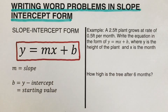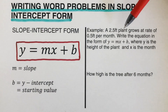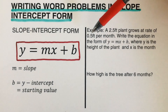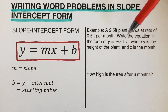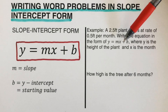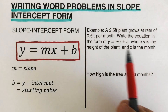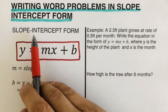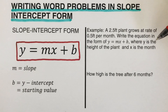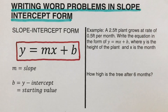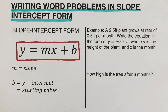Now let's take this first example. A 2.5-foot plant grows at a rate of 0.5 foot per month. Write the equation of the form y equals mx plus b, where y is the height of the plant and x is the month. First, we are going to determine what m is and what b is.